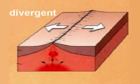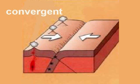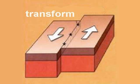Remember: in divergent, the plate boundaries are moving apart. In convergent, they are moving together, pushing into each other. In transform, the plates slide past each other in a sideways movement.